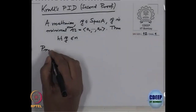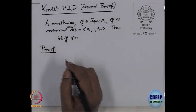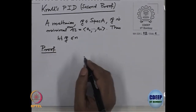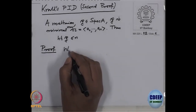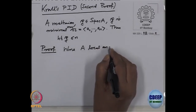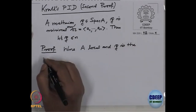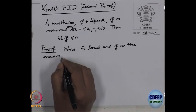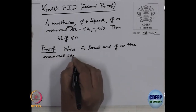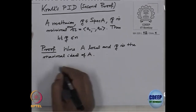So we are going to prove this as usual. We may assume A is local and P is the maximal ideal of A. And again I will prove by induction on N.